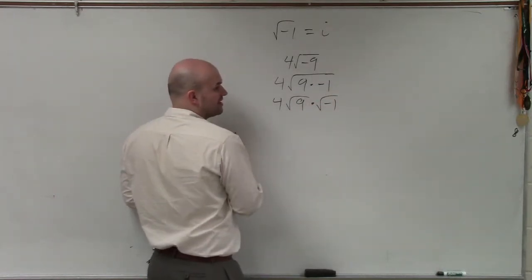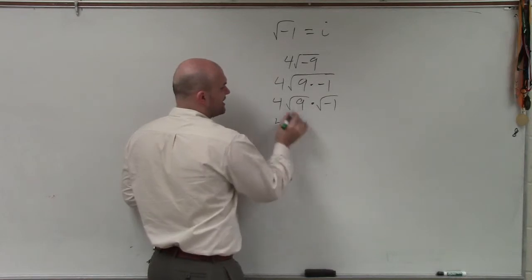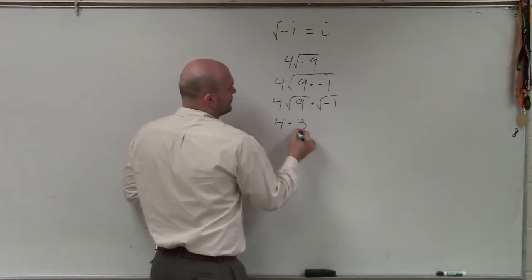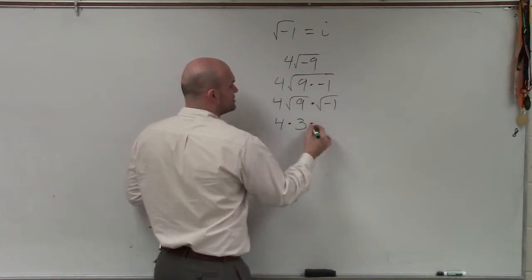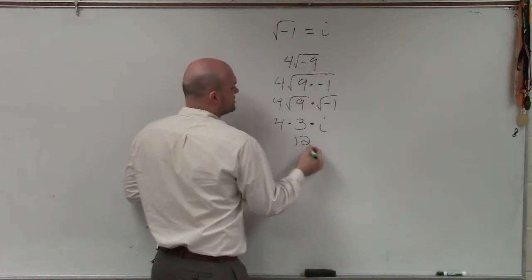We can rewrite square root of negative 1 as i. So I have 4 times the square root of 9, which is 3, times the square root of negative 1, which is i. 4 times 3 is 12i.